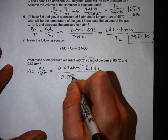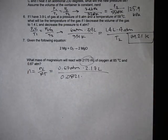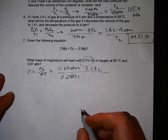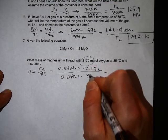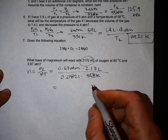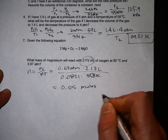The R is 0.0821 and the temperature is 85 degrees celsius, which is 358 kelvin. Okay, solve that and you get about 0.05, that's moles of oxygen.